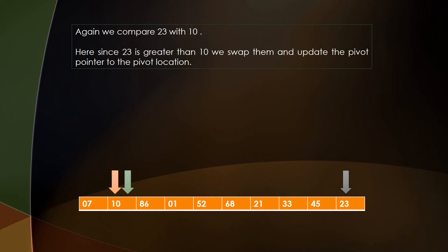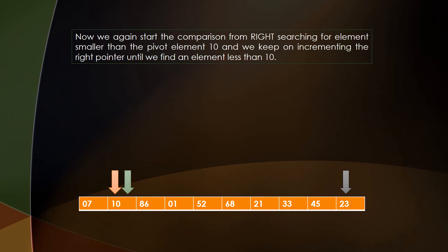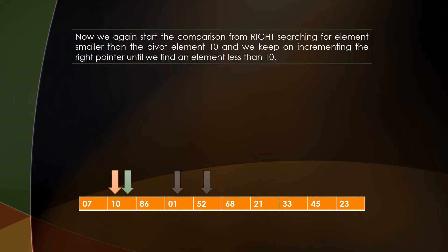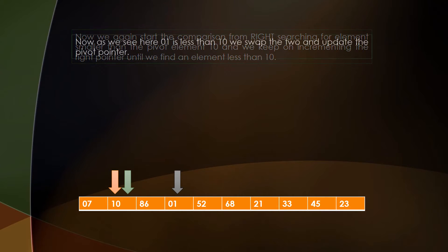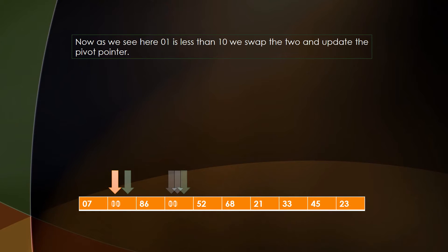Now we search from the right for elements less than 10. We compare 45, 33, 21, 68, 52, and 1. Since 1 is smaller than 10, we swap the two numbers and update the pivot pointer. The positions of 1 and 10 are swapped and the pivot pointer is updated.